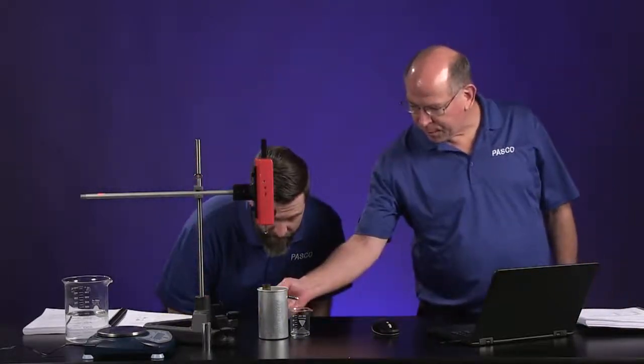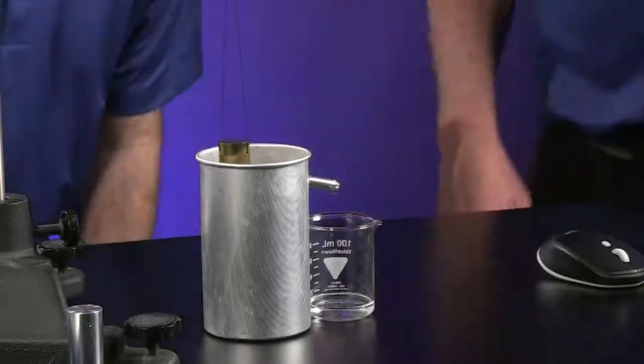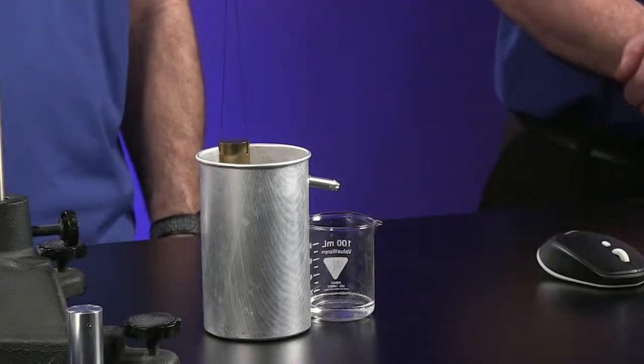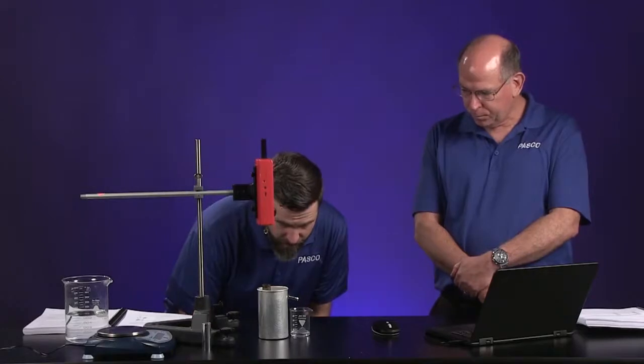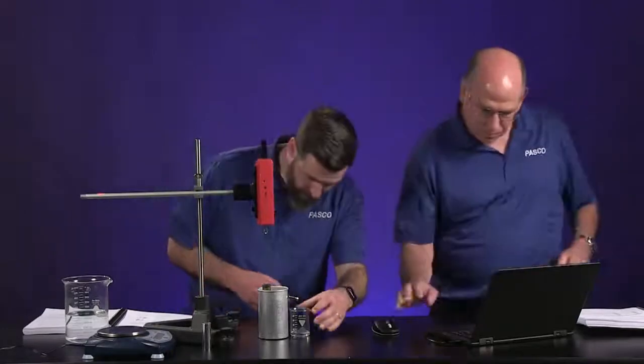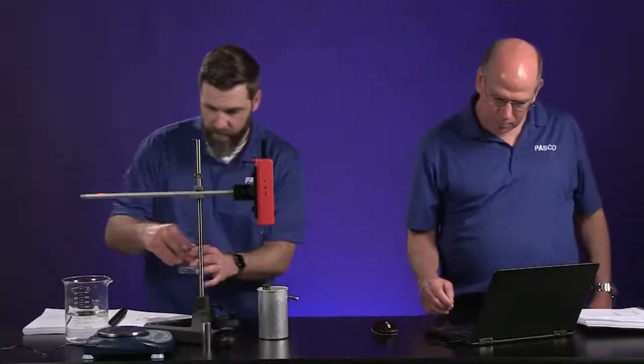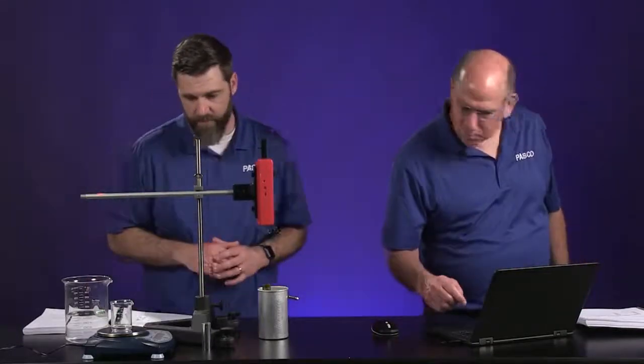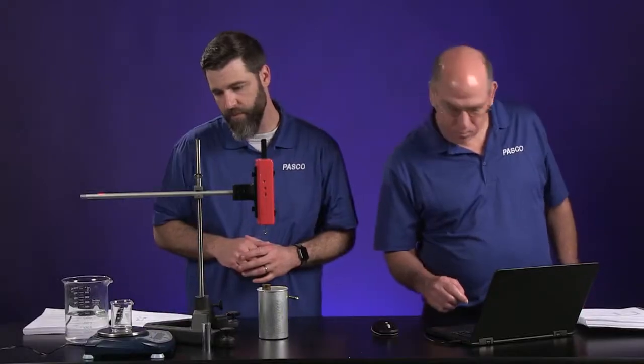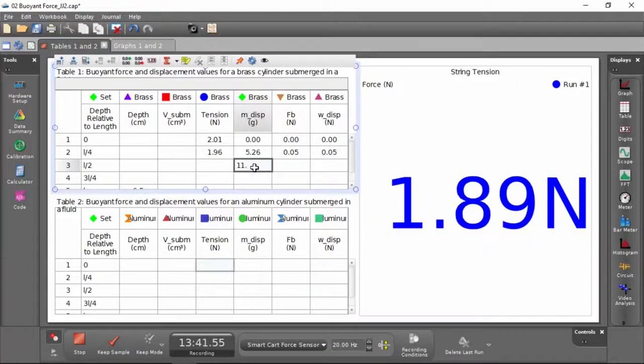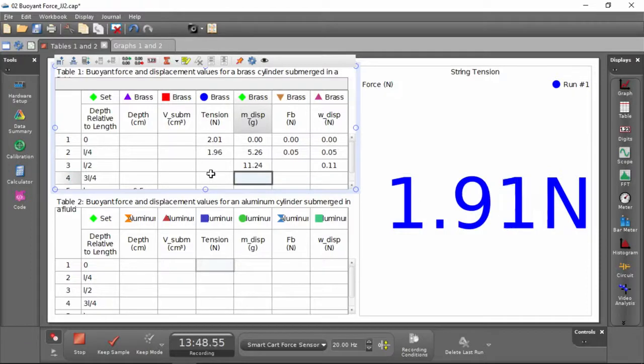Sometimes you can speed it up by tapping it a little bit, but you don't want to upset it if you want accurate data, right? That's good. I'm going to put this on the balance: 11.24 grams. That makes sense. It's a little more than double the other one. And then we have 1.9 tension.